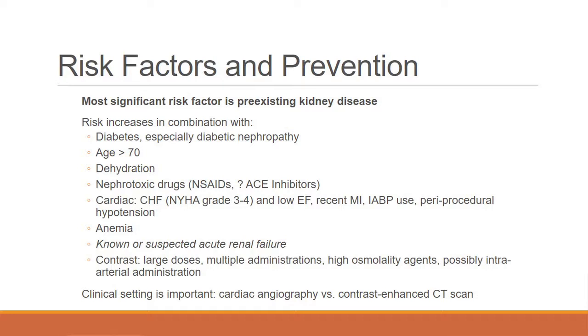A lot of prior studies were done in patients receiving cardiac angiography — patients going for cath — at which point you're already dealing with possible CHF, myocardial infarction, potentially hypotension. This really compounds the question of whether the renal injury is due to contrast or the hypotension. An important risk factor to highlight is known or suspected acute renal failure. Much of what we'll discuss, including creatinine and GFR, applies to patients with stable renal function. Anyone coming in with an AKI involves a completely different risk profile.